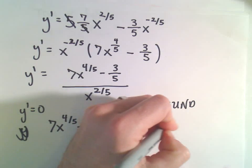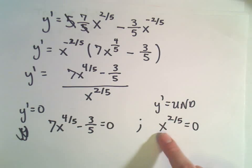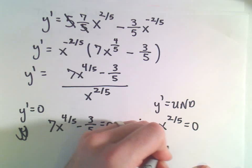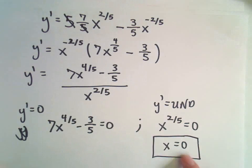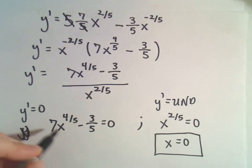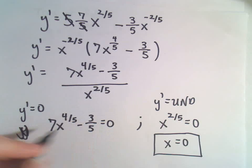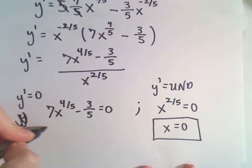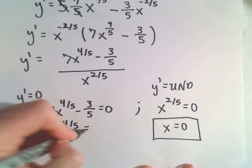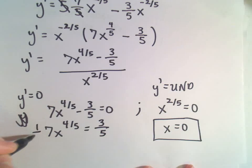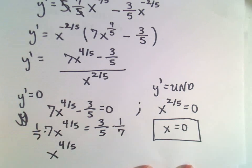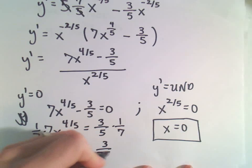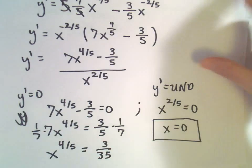For the derivative to be undefined, the denominator equals 0. You can raise both sides to the 5/2 power, and 0 to the 2/5 power is what gives us 0, so that makes our function undefined at x equals 0. For setting the derivative equal to 0, I'll add 3/5 to both sides and multiply both sides by 1/7. That gives us x to the 4/5 equals 3/35.